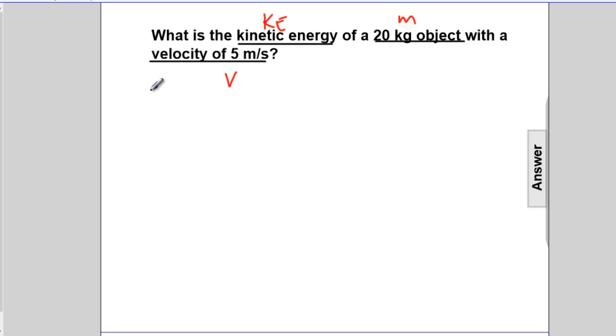As defined previously, the formula for kinetic energy is one-half times the mass times the square of the velocity.